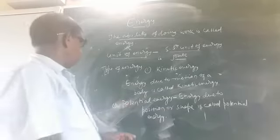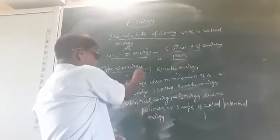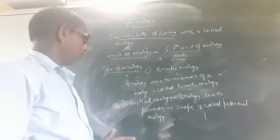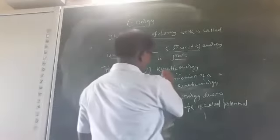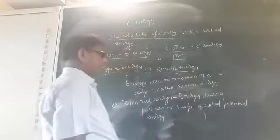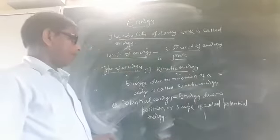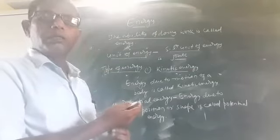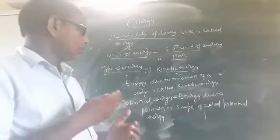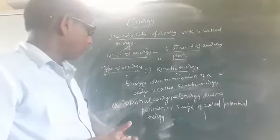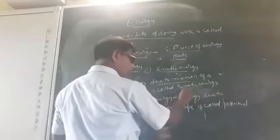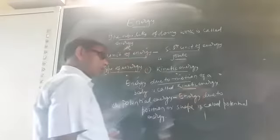Okay. Now, type of energy. There are two types of energy. First energy is kinetic energy. The word kinetic is derived from Greek word kinases. Kinases means motion. If any object acquired energy due to motion, this energy is known as kinetic energy.